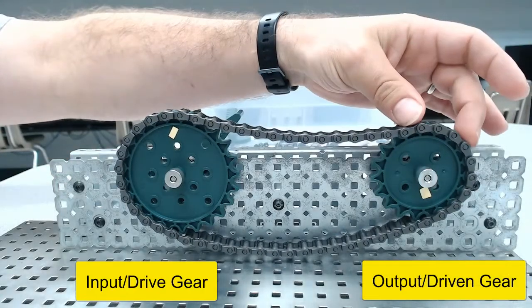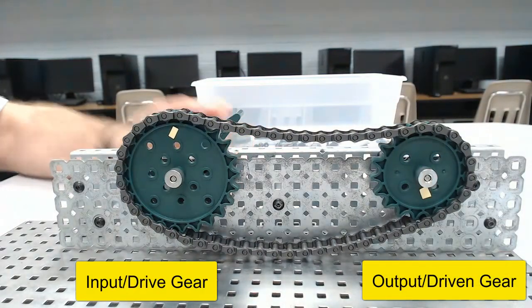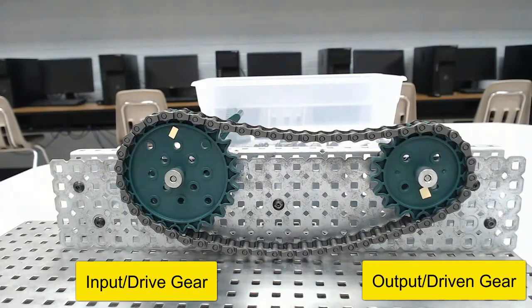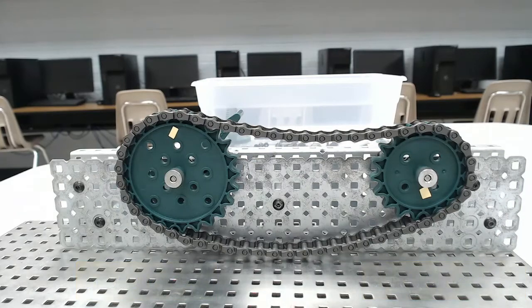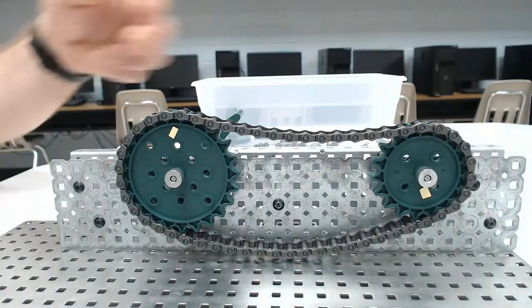So here we have our input or drive sprocket, and here we have our output or driven sprocket. Now one of the nice things about a chain drive is that you can really have a wide variety of positions for our two sprockets because they do not have to be directly connected. The chain does that for us, which means I can take this and go up, down,